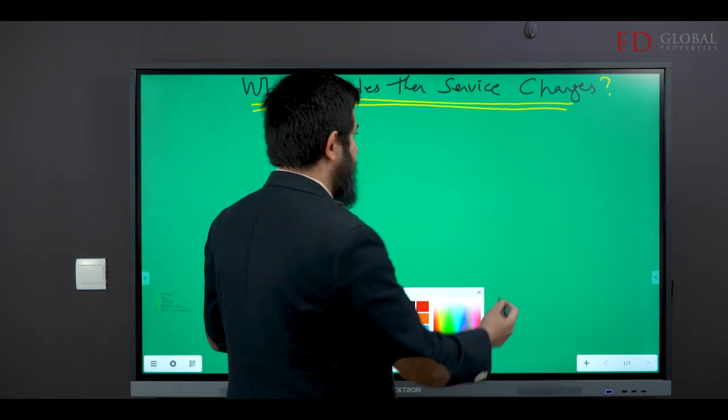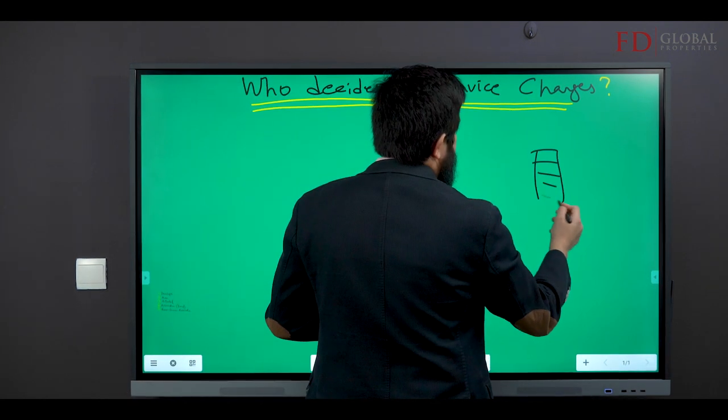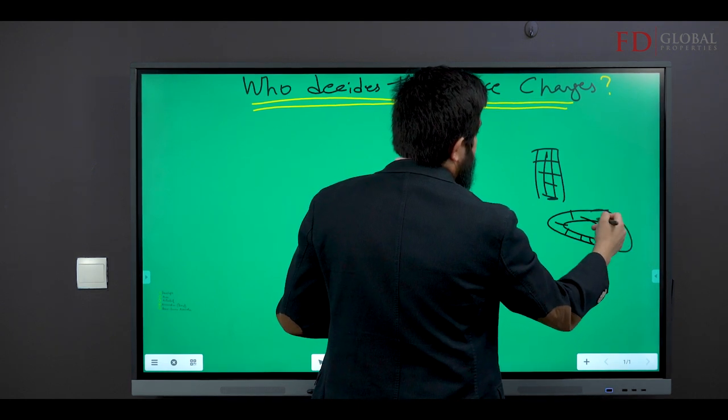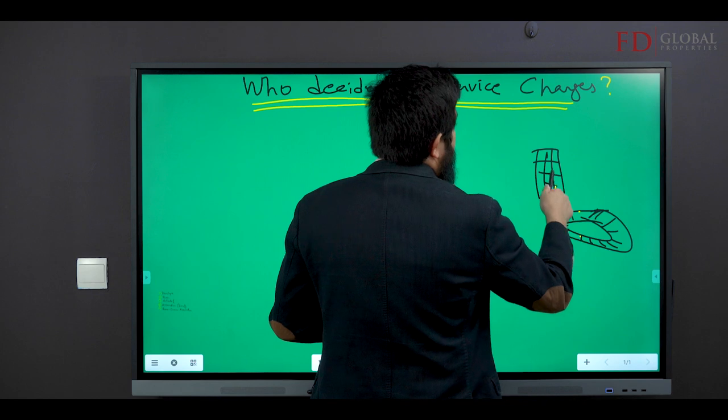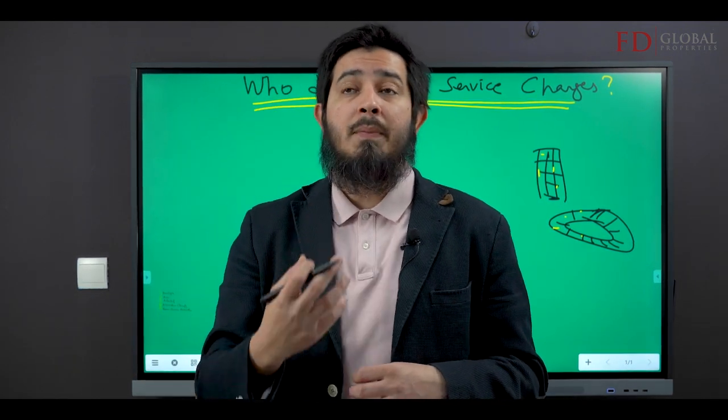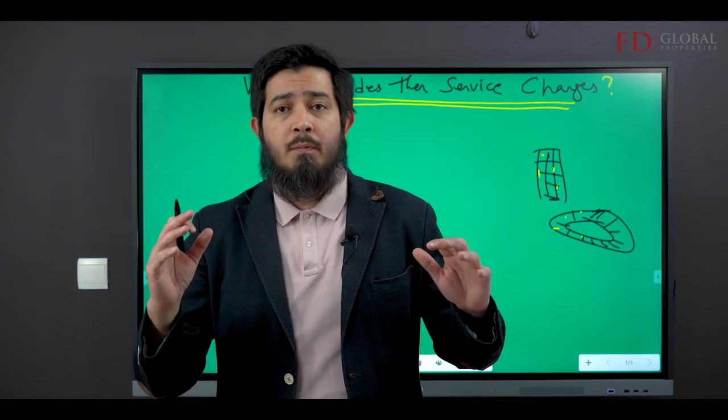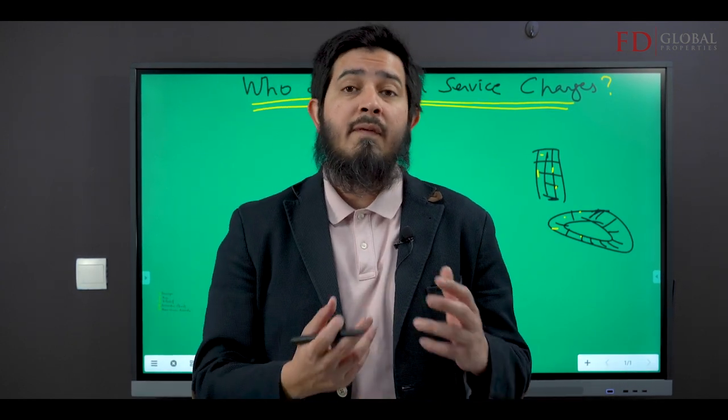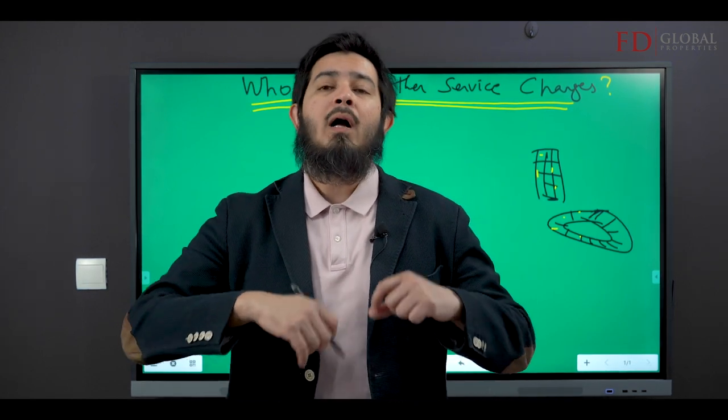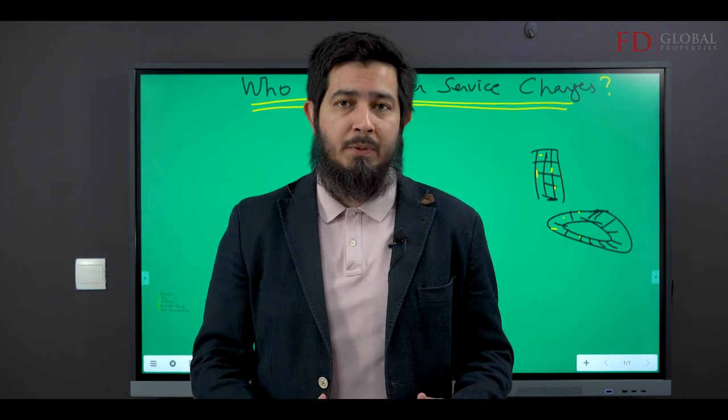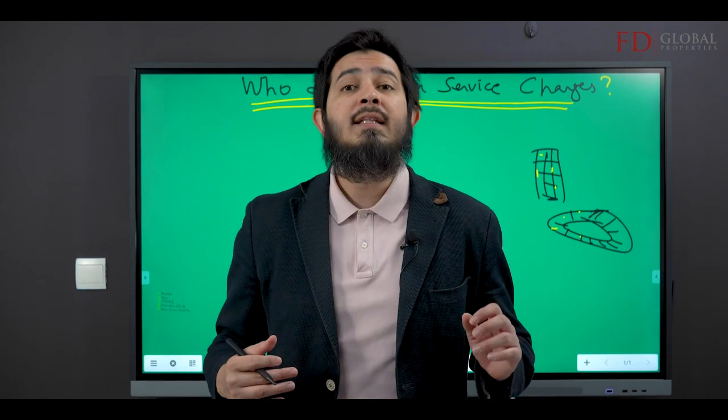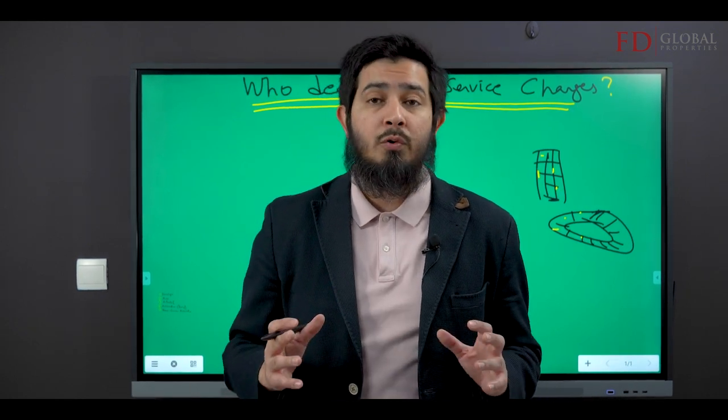This is how service charges work. You've got a building, townhouses, or villas. To maintain the facade of this building, the common areas, the swimming pool, the security services, the concierge, maybe there's valet options - all of this is paid for by all the owners that live in that property. They contribute according to the square footage that they own.